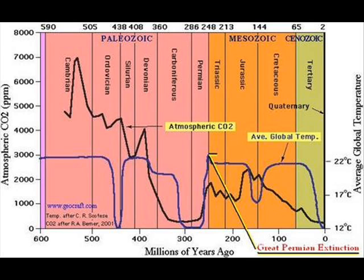Now if you look at this chart, you'll see that CO2 in black and the temperature in blue do not match. The average temperature over geological time was around 22 degrees Celsius. We are now at one of the low points, which is actually quite rare and does not usually last very long.